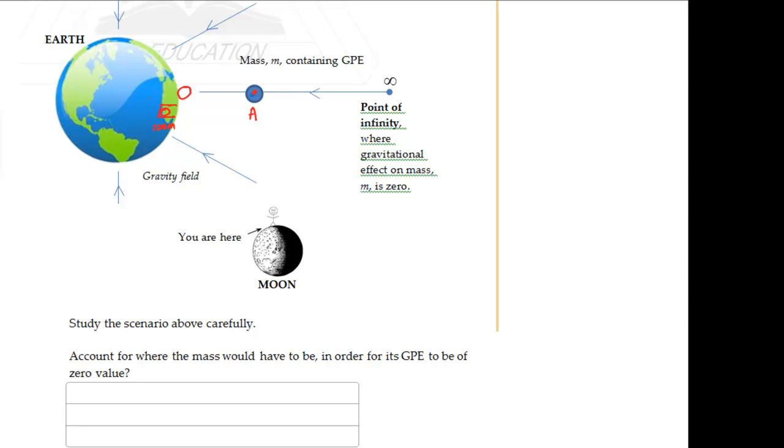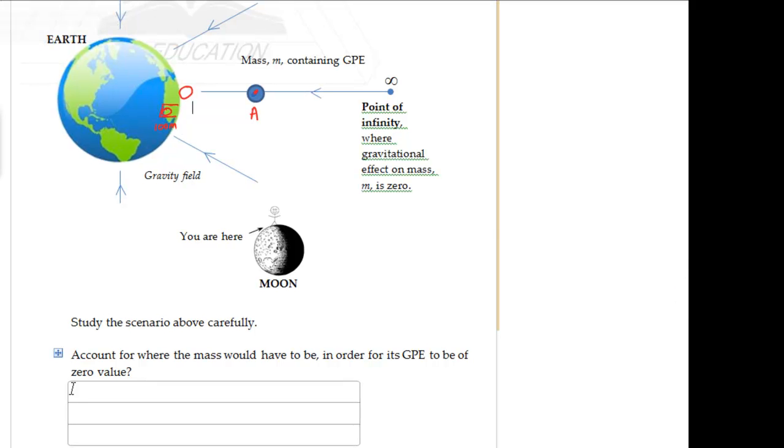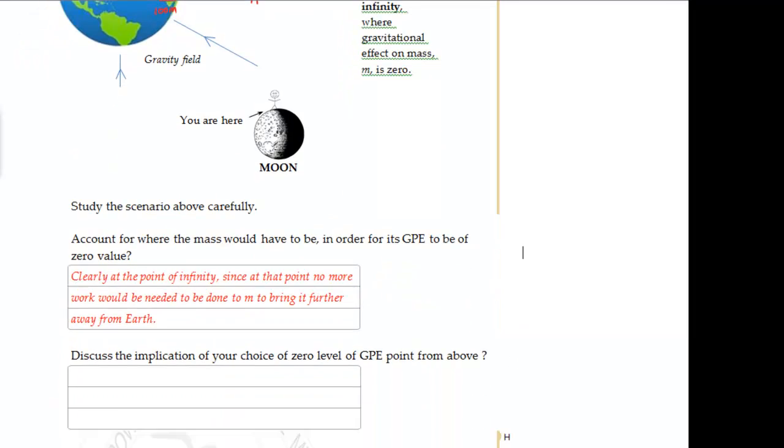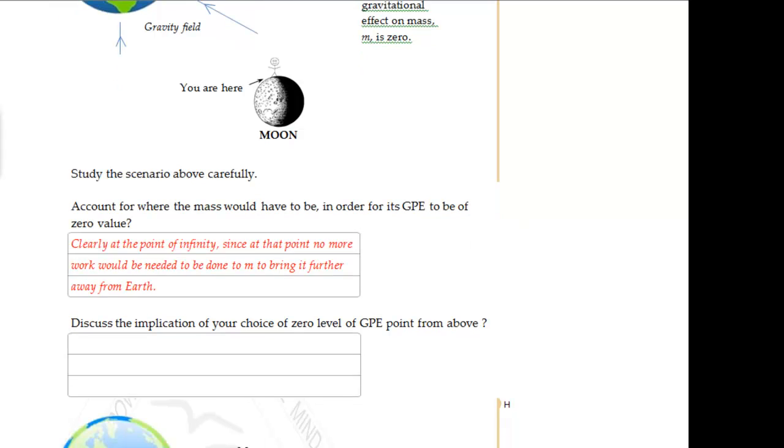Anyway, I'll write the answer down for you here. Okay? So as I say here, clearly at the point of infinity, since at that point, no more work would be needed to be done to M, to bring it further away from Earth.